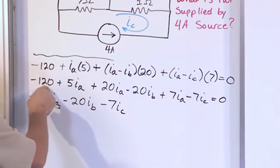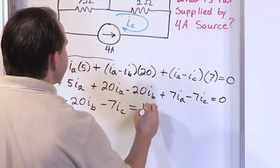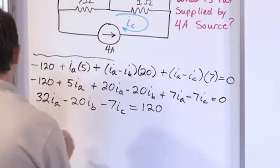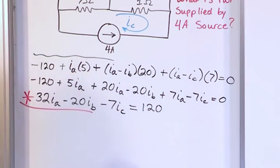And that's all correct. The only constant I have is this negative 120. Let's move it to the other side of the equal sign, make it a positive 120. So this is our first mesh current equation that we're going to use to solve this problem.